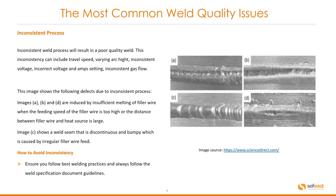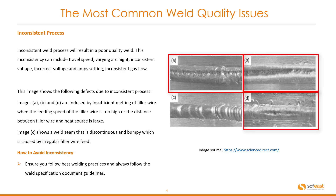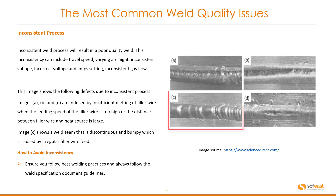Inconsistent weld process will result in a poor quality weld. This inconsistency can include travel speed, varying arc height, inconsistent voltage, incorrect voltage and amp settings, and inconsistent gas flow. This image shows the following defects due to inconsistent process: images A, B, and D are induced by insufficient melting of filler wire when the feeding speed is too high or the distance between the filler wire and the heat source is too large. Image C shows a weld seam that is discontinuous and bumpy, caused by irregular filler wire feed.